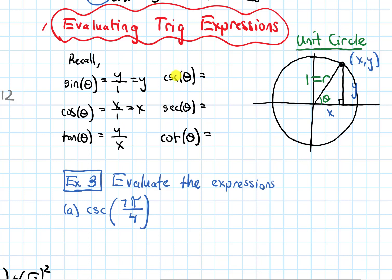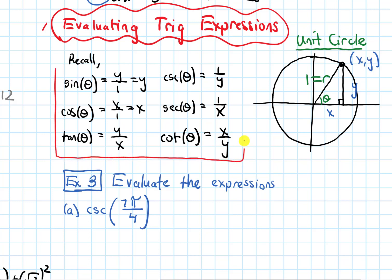The other three trig functions — cosecant, secant, and cotangent — are just the reciprocals of the functions directly across from them. Cosecant is the reciprocal of sine, so it's one over y. Secant is the reciprocal of cosine, so it's one over x. And cotangent is the reciprocal of tangent, so it's x over y.